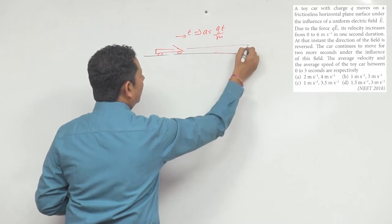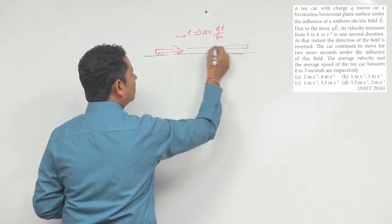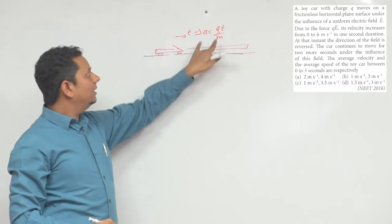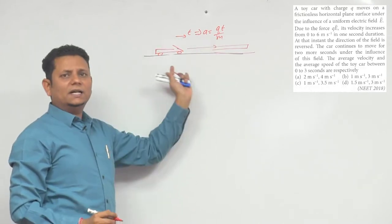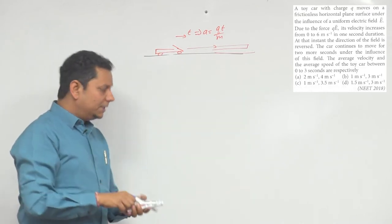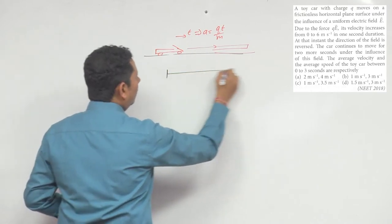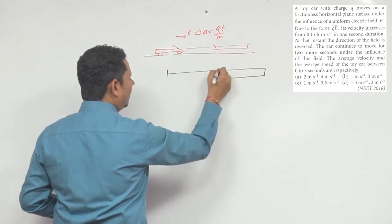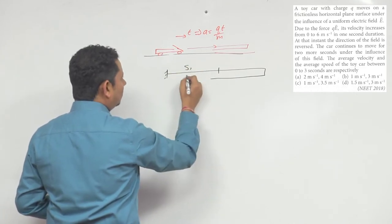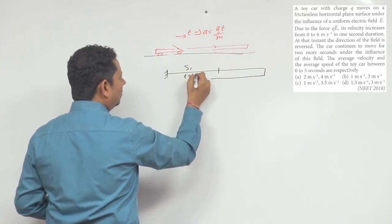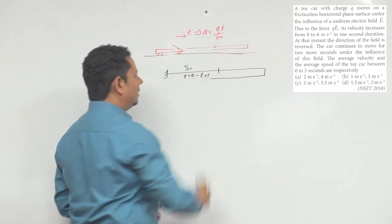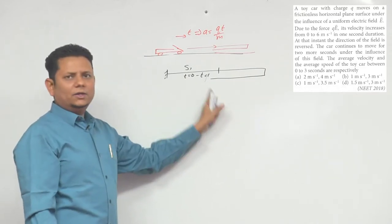The car travels for one second at this speed. Then the electric field is reversed, which means the acceleration will be reversed. The acceleration will be the same magnitude but opposite direction. After that, the car continues for 2 more seconds. So we have motion from T equals 0 to T equals 1, then T equals 1 to T equals 3.